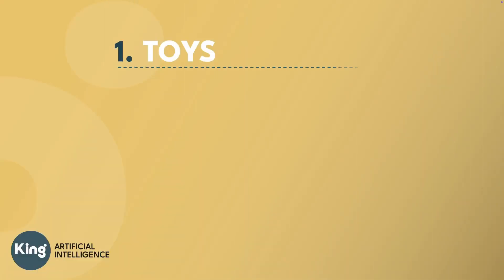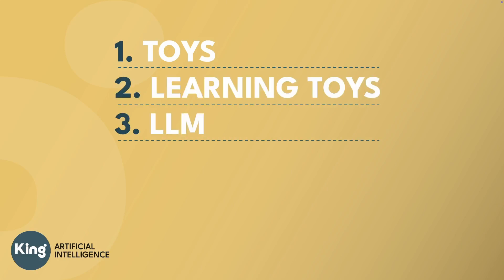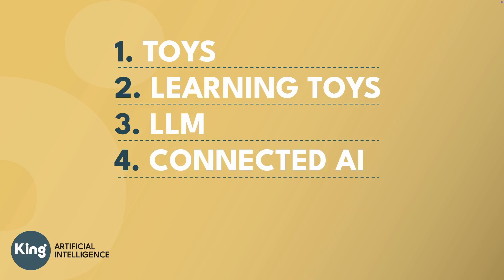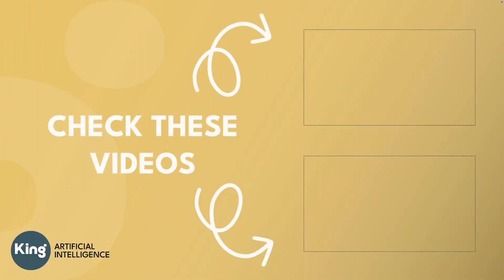So that's the journey — from simple toys that can only do one thing, to learning AI, to language models that can talk about anything, to connected systems that can take actions, and finally to AI agents that can figure out how to help you with complex tasks. We are still in the early days of AI agents, but they are getting better all the time. Soon, having a digital helper that can understand your needs and take actions to help you might be as common as having a smartphone. Thanks for watching, and I hope you now understand what AI agents are all about. Stay tuned for more AI videos.